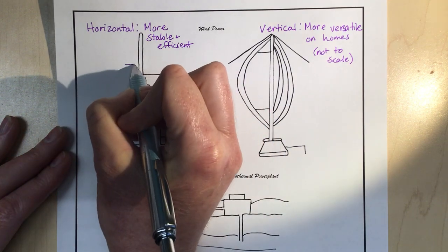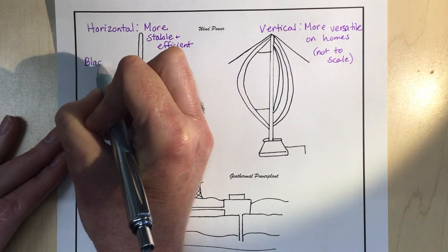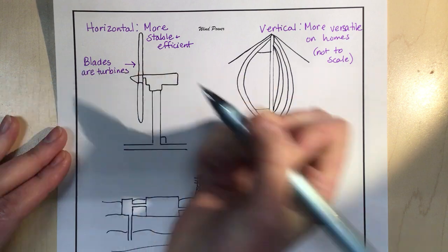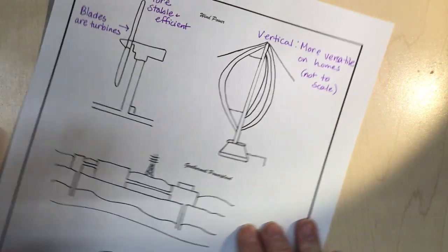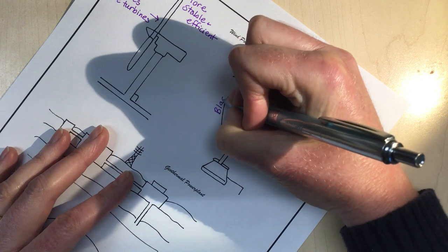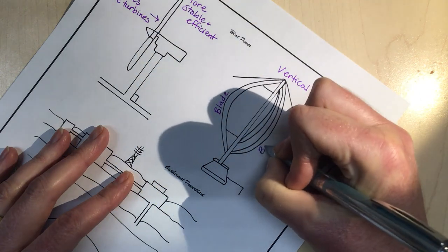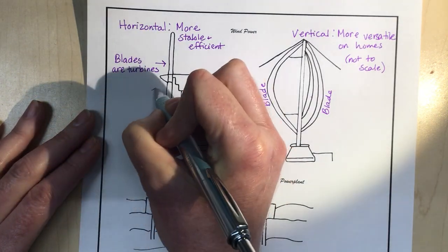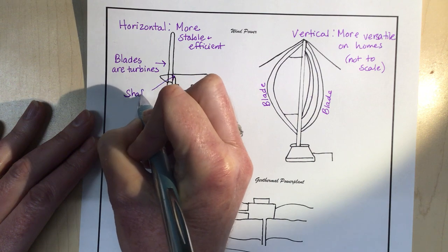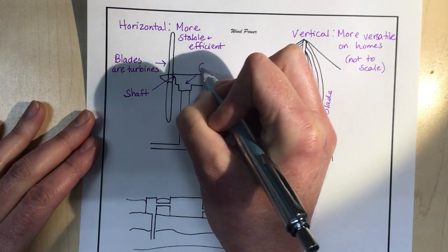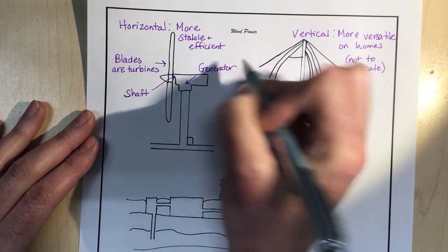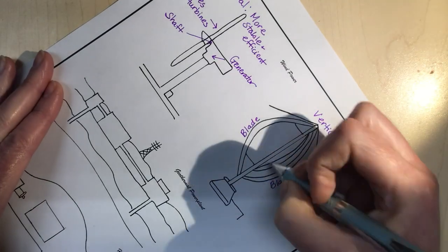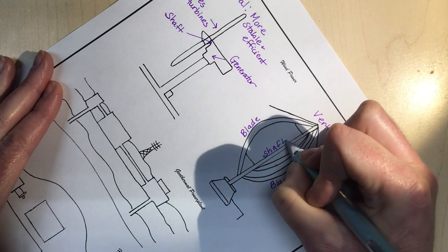The basic things here is that our blades are our turbines. So over here these are the blades. Here's a blade, there's a blade, there's actually a third one right there in the middle. Then you have the shaft is right here and the generator is here. On this model you have the shaft is the whole thing here in the middle holding it up, and then at the bottom you have the generator here.